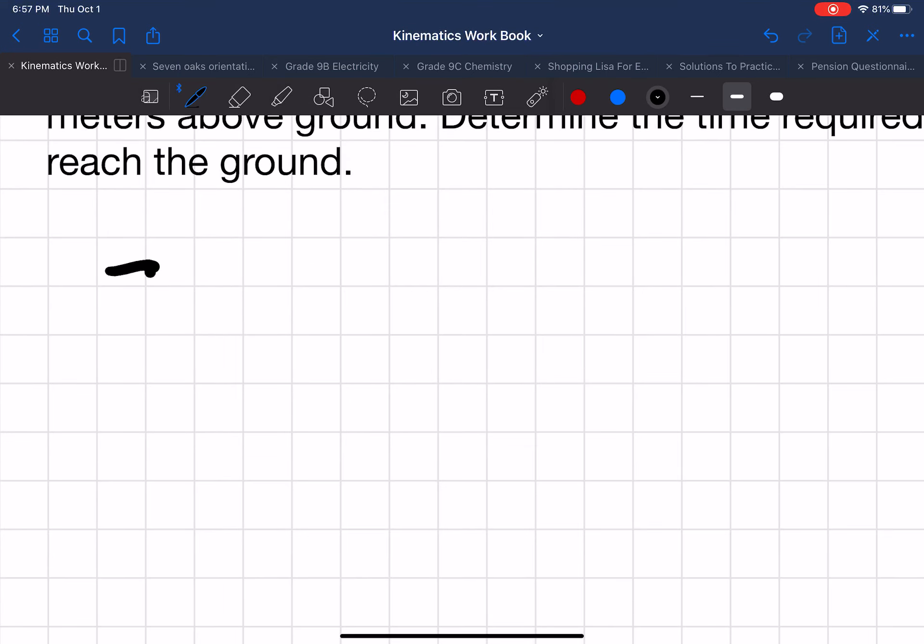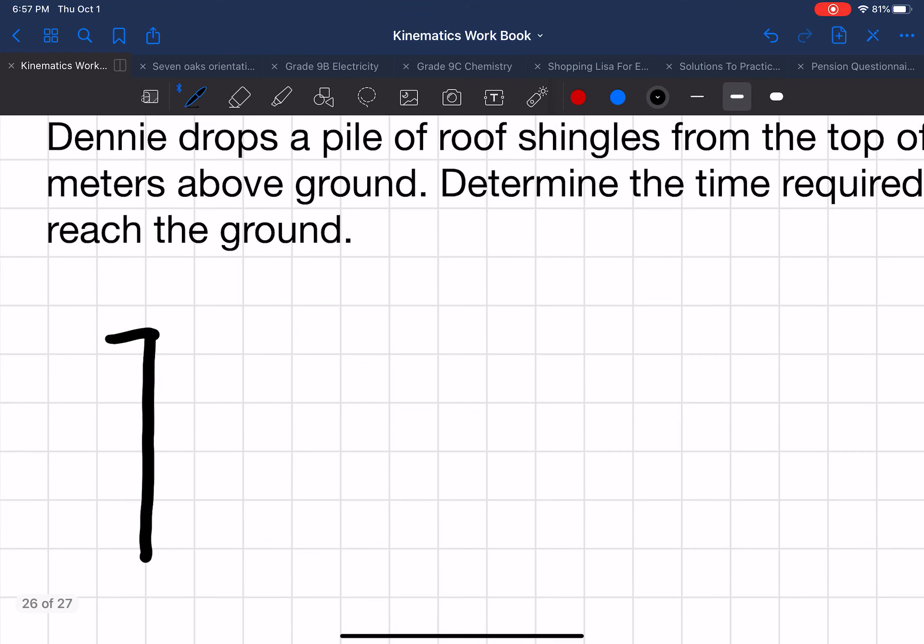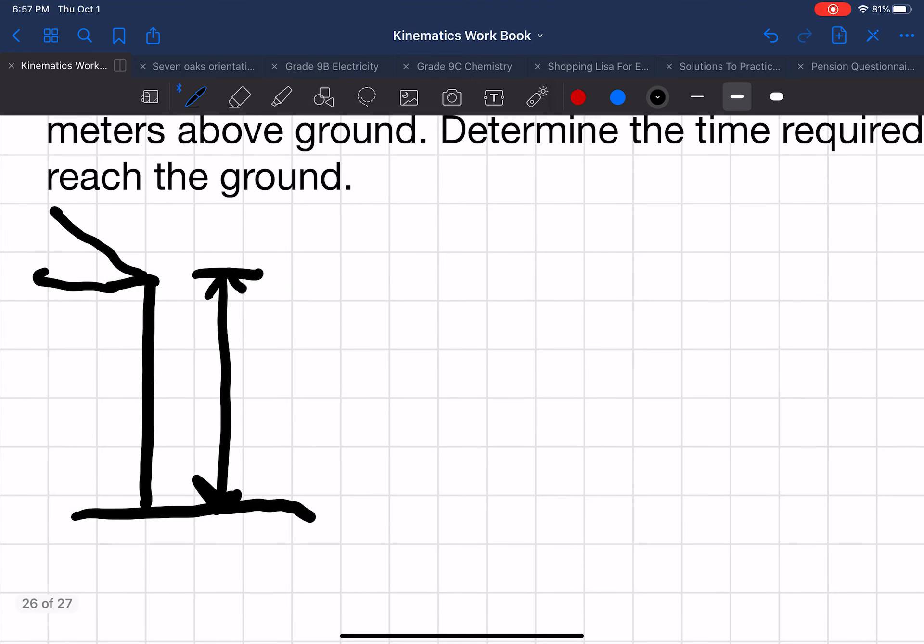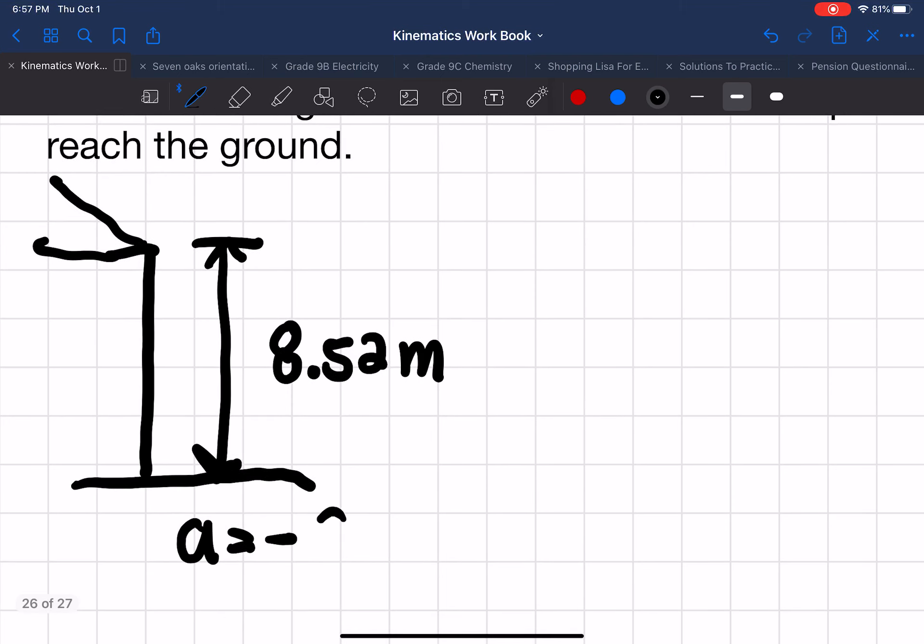So let's start off by drawing it. I'm going to draw just kind of like a height here from a roof. So this is a house. And then from this distance down to this distance, the ground here, we know is 8.52 meters.